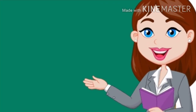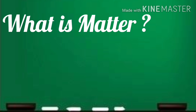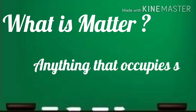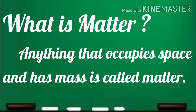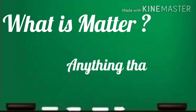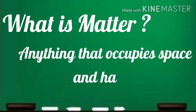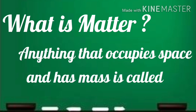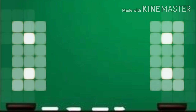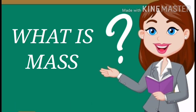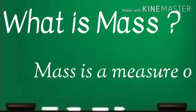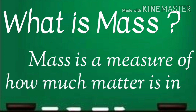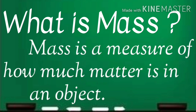Children, what is matter? Anything that occupies space and has mass is called matter. Children, say after me: anything that occupies space and has mass is called matter. Children, what is mass? Mass is a measure of how much matter is in an object.